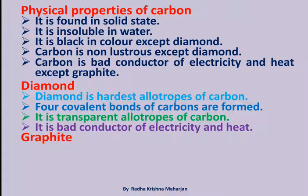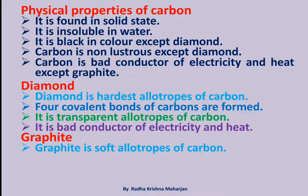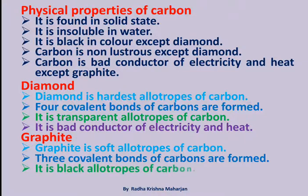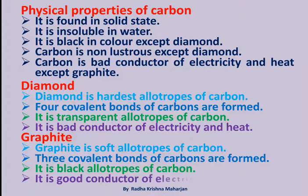Graphite: Graphite is the soft allotrope of carbon. Three covalent bonds of carbon are formed. It is the black allotrope of carbon. It is a good conductor of electricity and heat.